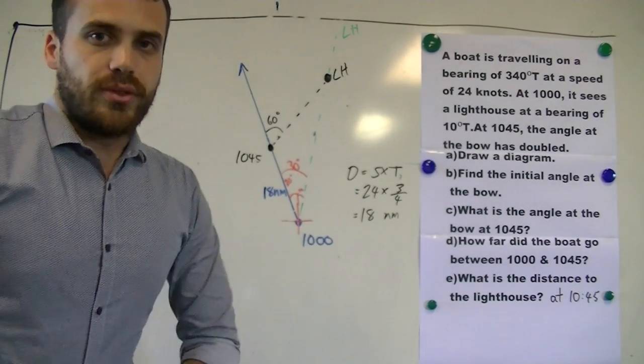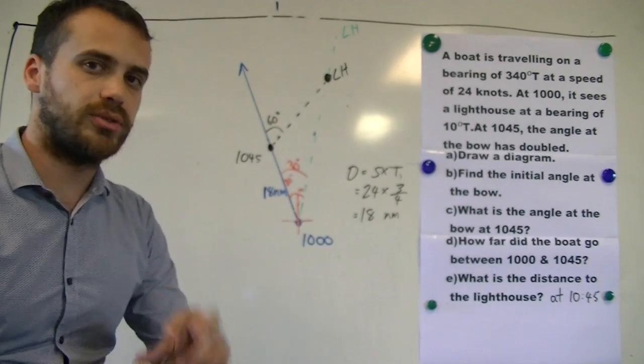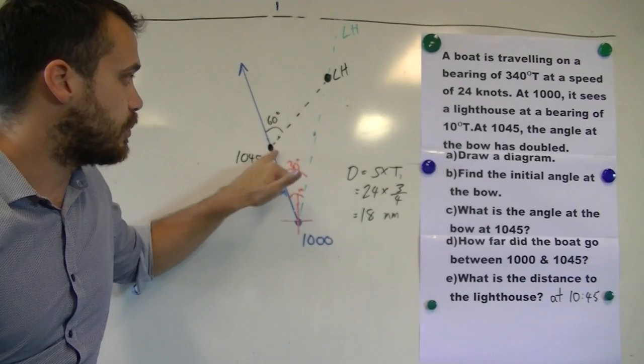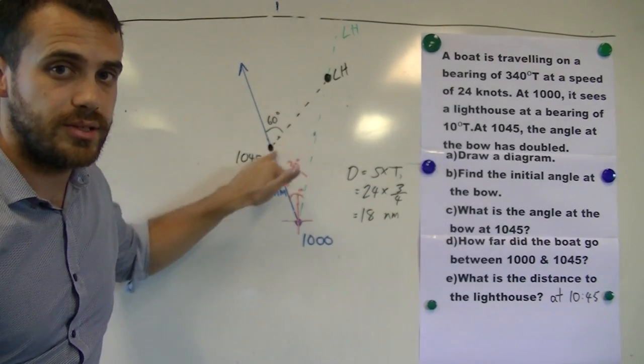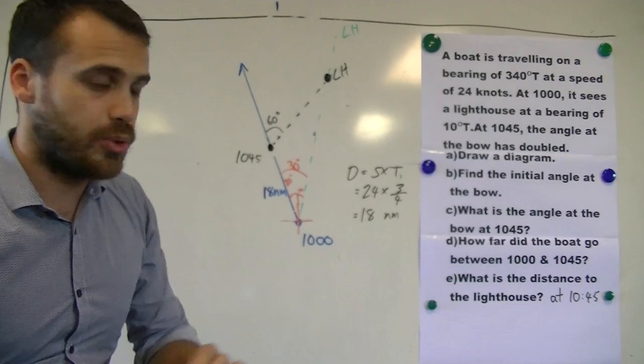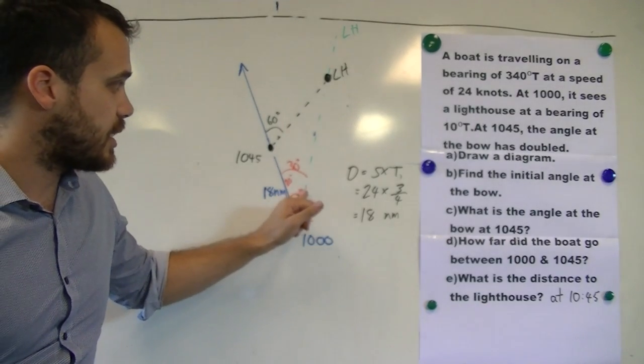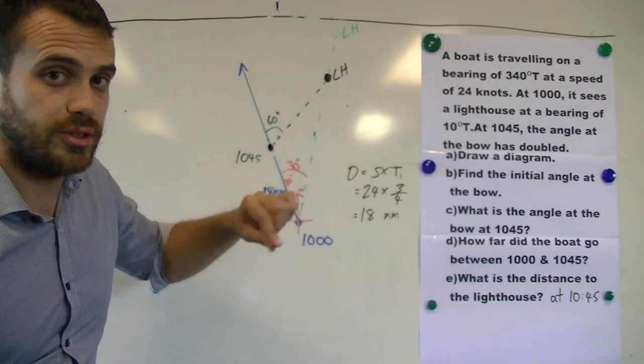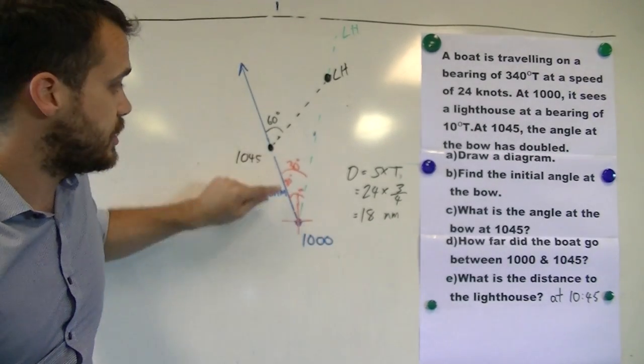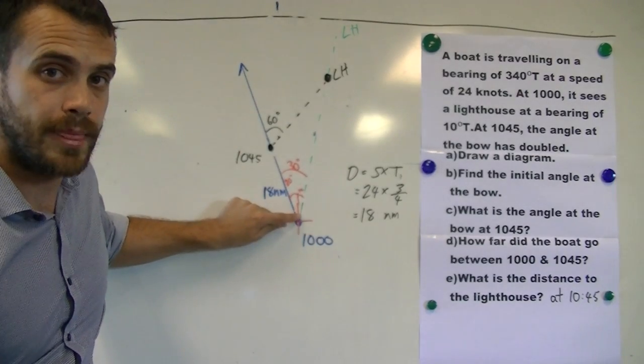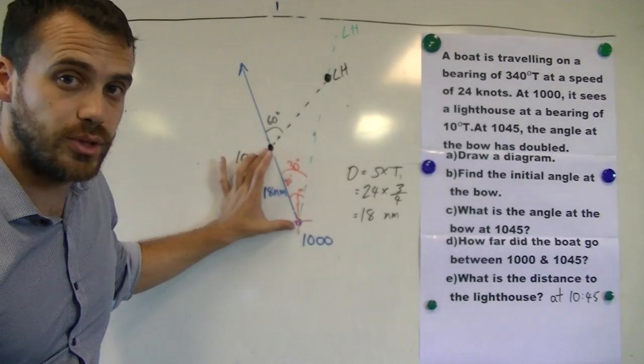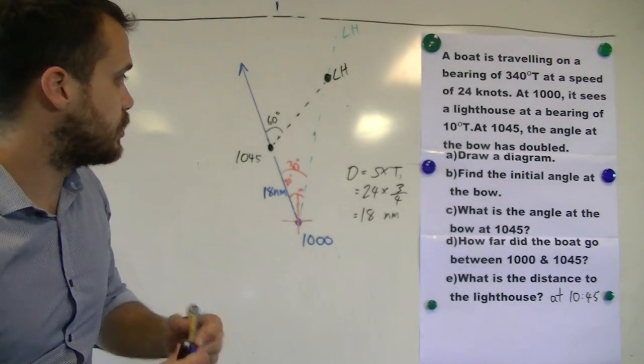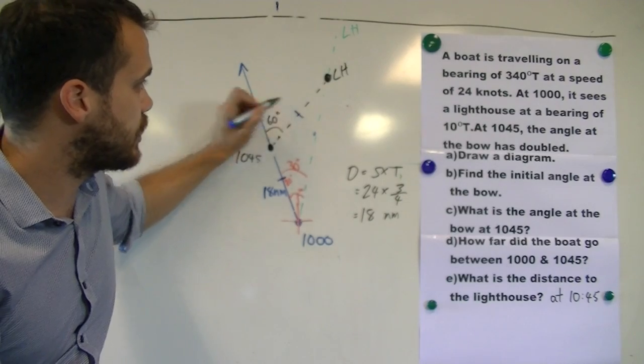Now, last step here. The reason we were doing this whole doubling at the bow thing was because we want to know the distance at 10:45 from here to the lighthouse. Now the reason doubling at the bow is important is because if you create this angle and then you double the angle here, you create an isosceles triangle, that is a triangle with two equal sides. So if we know that that's 18 nautical miles because we've been measuring our speed, we can also say that this is 18 nautical miles as well. That is, these two lines are equal.